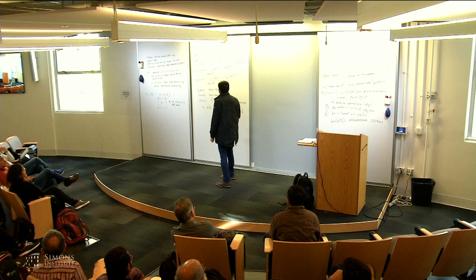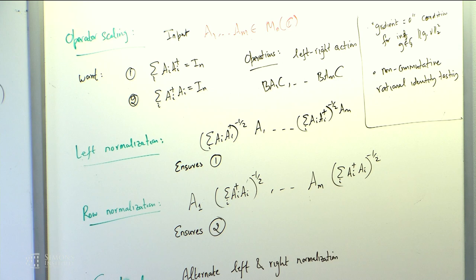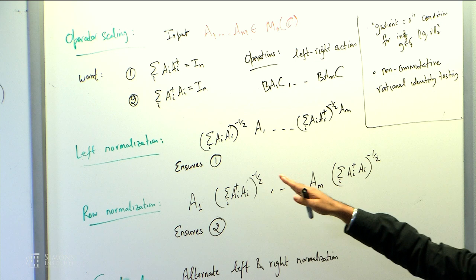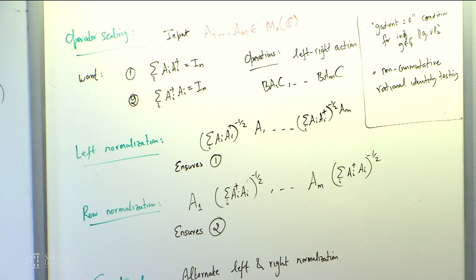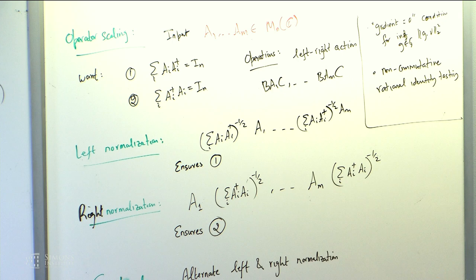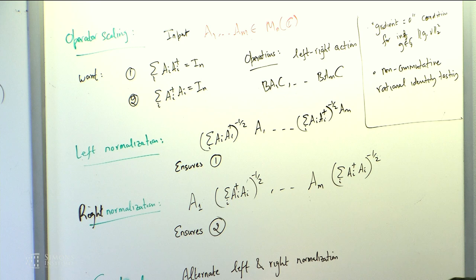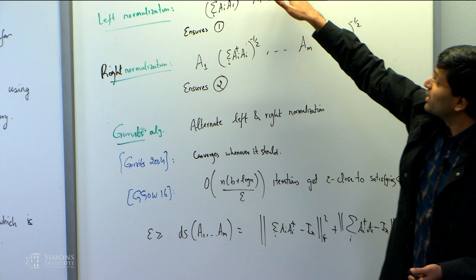Similarly to matrix scaling, there are two operations. Left normalization: multiply all the A_i's on the left by the inverse square root of what you want to be identity — this ensures condition one is satisfied. Right normalization: multiply the A_i's on the right by the inverse square root of the other term — this ensures condition two is satisfied. Garg, in 2004, suggested alternately applying right and left normalization. He also proved it converges whenever it should — whenever there exist B and C such that the scaled conditions are satisfied.